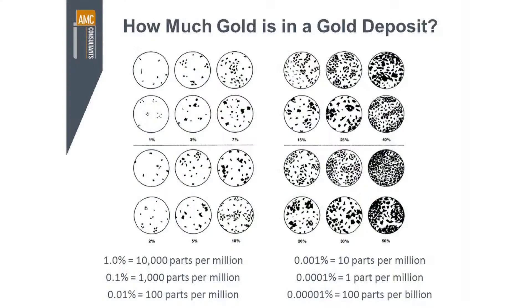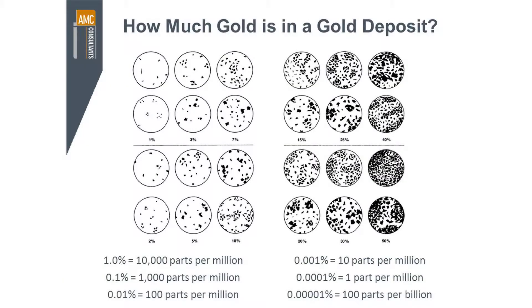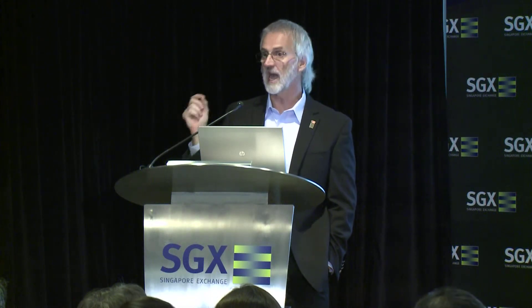Dividing by 10, you're down at 0.1%, which is 1,000 parts per million. There are virtually no gold mines operating at 1,000 parts per million. Take another 10% and you're at 0.01%, which is 100 parts per million — virtually no mines in the world operate at an average grade of 100 parts per million. Take another 10% and you're down at 0.001%, which is 10 parts per million. There are quite a lot of mines operating at 10 parts per million.